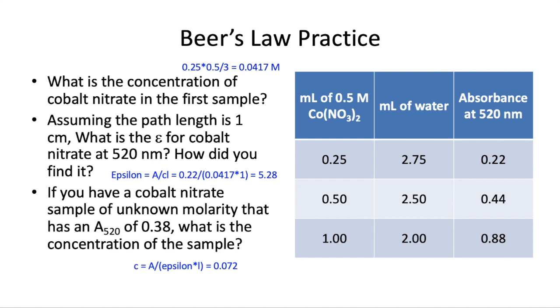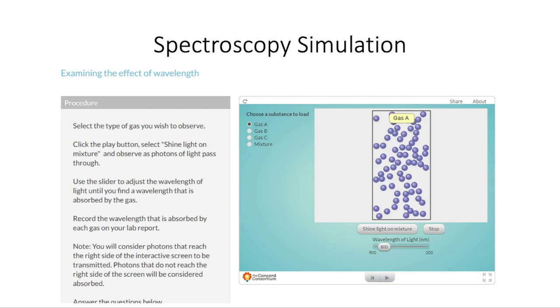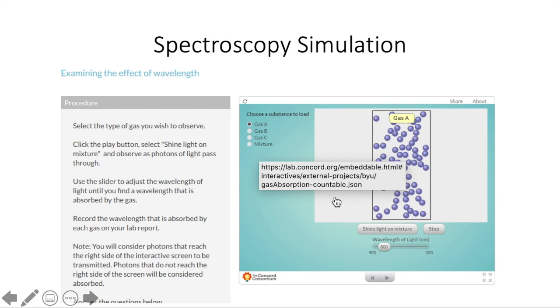In class today, you'll be doing a spectroscopy simulation. You may actually do it outside of class because the skills videos will be happening in class. But essentially, you want to watch for the photons of light that come from the left and see how many of them hit this right side of the box. And we're going to call those transmitted. And the ones that don't make it there, we'll call absorbed. And this depends again on the identity of the gas and also the wavelength of light.